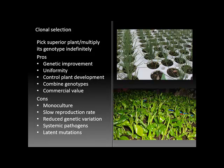A second con is that there's a slower reproduction rate in some cases because these plants are produced in an arrested state of development at a juvenile stage. Although many plants can be produced, they may not come to flower or seed production for a longer time than what might otherwise be seen in the wild.